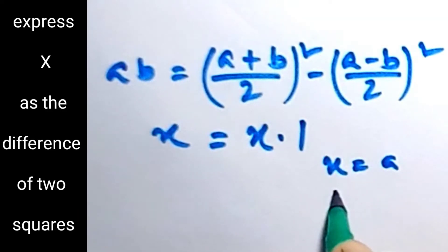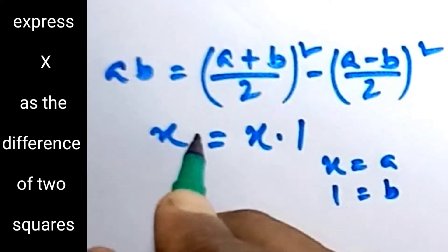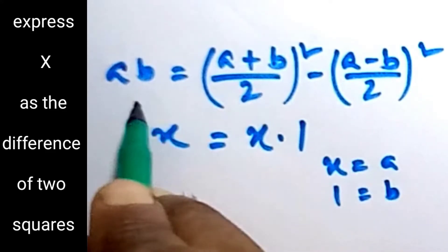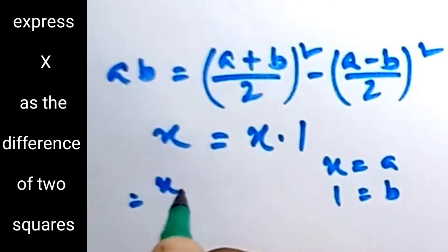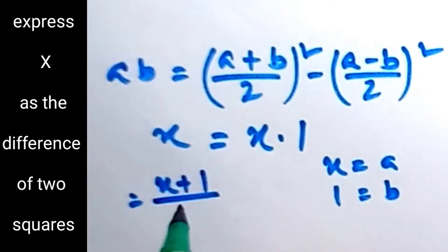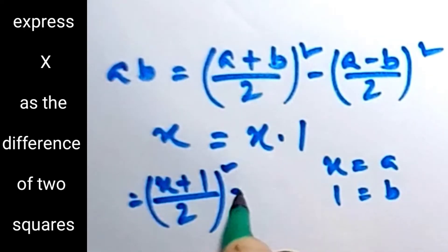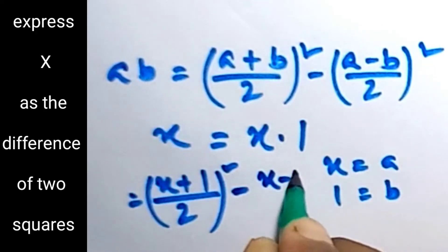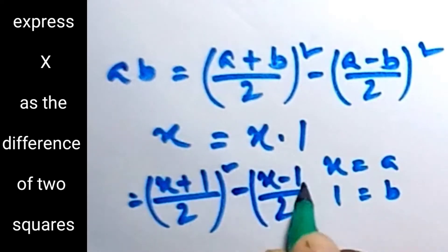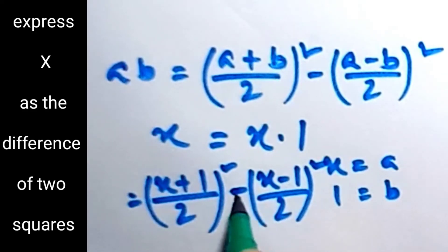Using this formula, we can write (x+1)/2 square minus (x-1)/2 square. This is the difference of the two squares.